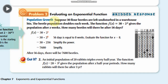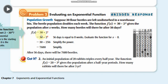Problem: suppose 30 floor beetles are left undisturbed in a warehouse and the beetle population doubles each week. Note that f(x) is just another name for y — the output. When we have more than one function we can call them f(x), g(x), etc. The given function is f(x) equals 30 times 2 to the power x, which is in the form a times b to the power x, confirming it is an exponential function.